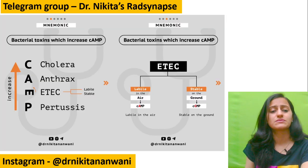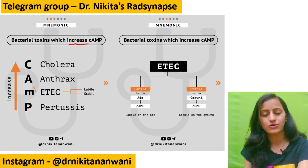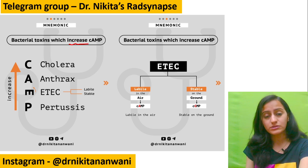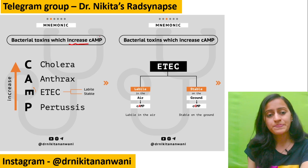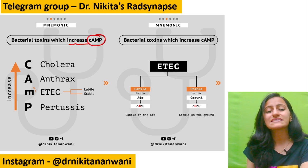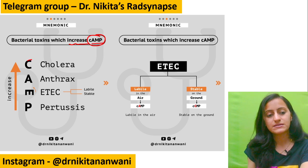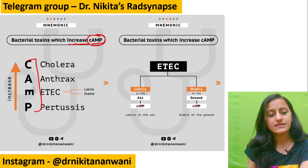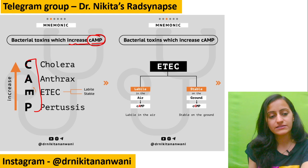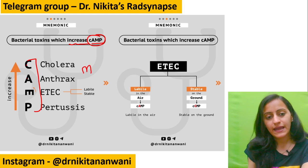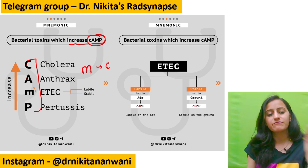Recently we posted a mnemonic for bacterial toxins that increase cyclic AMP on our Instagram. Let's quickly revise that. The trick for cyclic AMP increasing toxins: cAMP is CA-MP. For CA, remember that M, when rotated, becomes E.